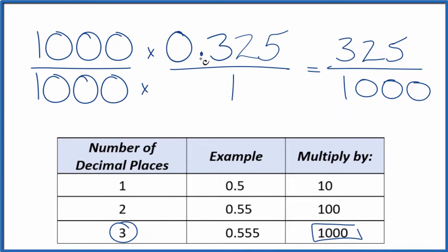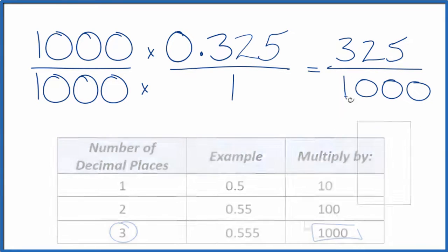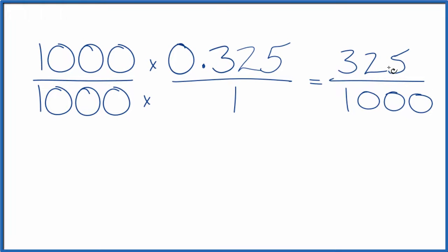That fraction is equal to the decimal 0.325. But we can reduce this further. Let's give ourselves some room. So I know 5 goes into 325 and 1,000. But 25 also goes into 325 and 1,000. So if we divide 325 by 25, we get 13. And if we divide 1,000 by 25, we get 40.